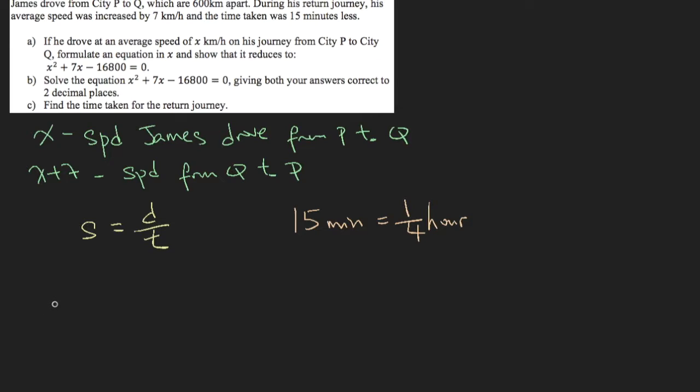So now let's formulate our equation. The time taken for James to travel from P to Q is given as the distance over the speed. And from P to Q, the distance is 600 kilometers. The speed is x.